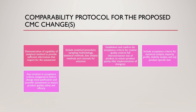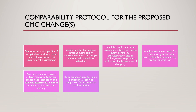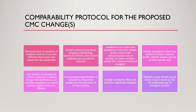Any variation in acceptance criteria compared to before the change needs justification and scientific assessment to ensure product quality, safety, and efficacy is not compromised. If any proposed specification is included in the protocol, provide a comparison for assurance of product quality. Include cumulative effect and trend for repeated changes. Validation studies should be included where required based on the risk assessment — for example, for biological products.